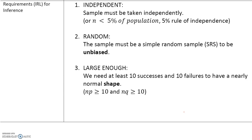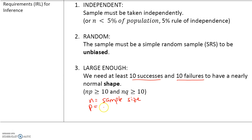Requirements: the sample must be taken independently, or the sample size must be less than 5% of the population; it must be random, specifically a simple random sample, to be unbiased; and it has to be large enough. We need at least 10 successes and 10 failures to have a nearly normal shape. So n times p has to be greater than or equal to 10, and n times q also has to be greater than or equal to 10. Remember, n equals the sample size, p is the number of successes divided by the sample size, and q is just 1 minus p.